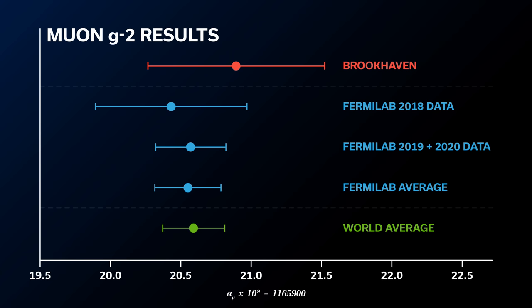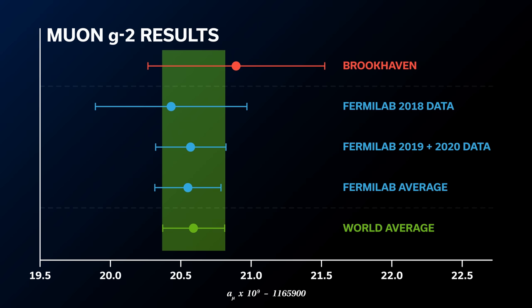And then here at the bottom of the plot, you have the world average, and so now this world average is the most precise ever measurement of muon g-2. So we're really proud of this achievement to get to this level of precision, but we're not done yet.